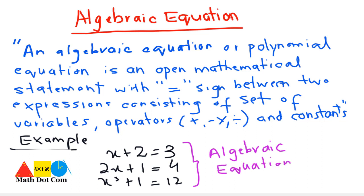They are algebraic equations due to the equality sign, variable, constant, and operator — as all these things exist in these equations. So it means each of these is an algebraic equation.